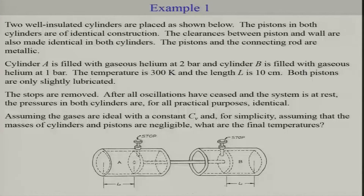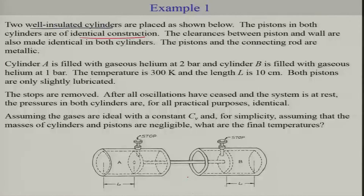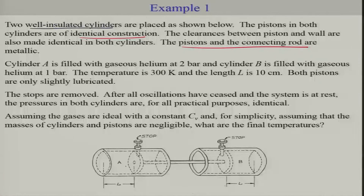What we have is two well-insulated cylinders placed as shown below. The pistons in both cylinders are of identical construction, and the clearance between the pistons and valves are also made identical in both cylinders. The pistons and the connecting rods are metallic, which means there is a transfer of heat from one region to another through the rod.